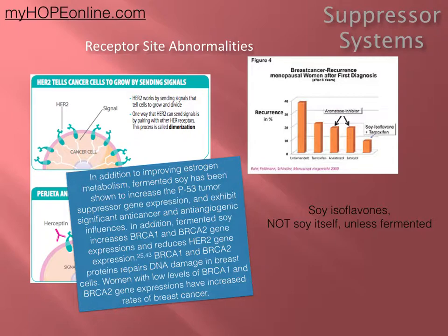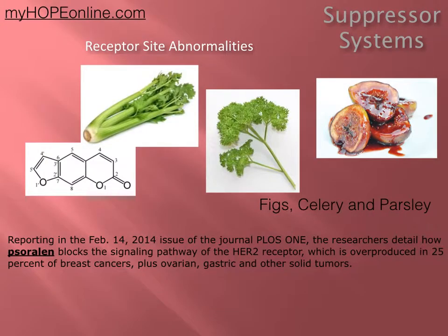Fermented soy also increases BRCA1 and BRCA2 gene expression. Like with Angelina Jolie, she has a genetic defect with a decreased expression of BRCA1 and BRCA2 genes — those are suppressor systems, so with a decreased expression, her chance of getting breast cancer is much higher. Does that mean you should just have your breasts removed? That's what she did, but my answer is no. There are ways to increase that expression from a natural perspective. So soy isoflavones — not soy itself unless it's fermented — are what we're talking about. It has to be a fermented soy product or a specific isoflavone.